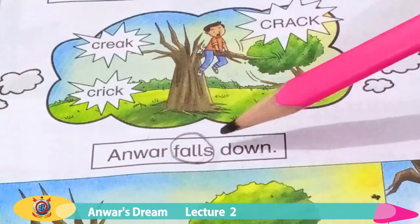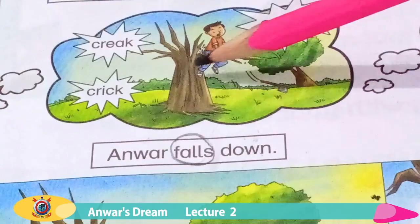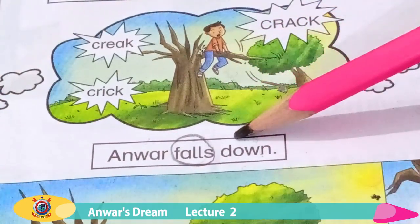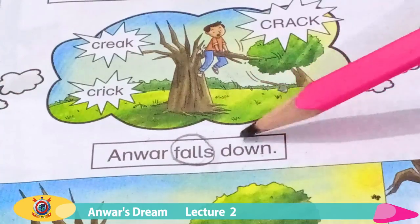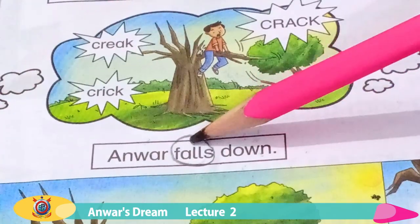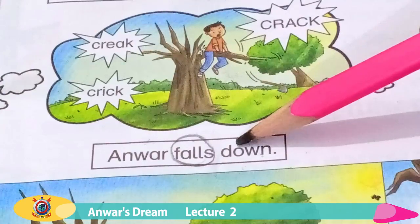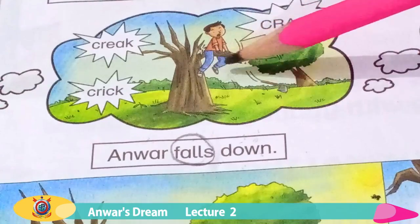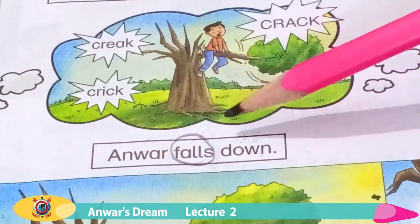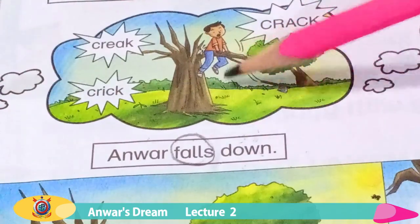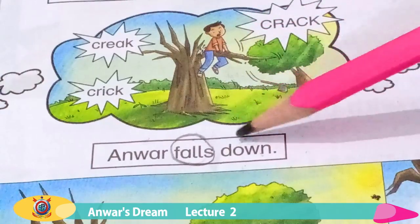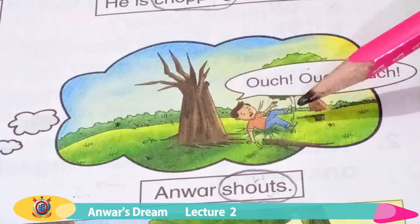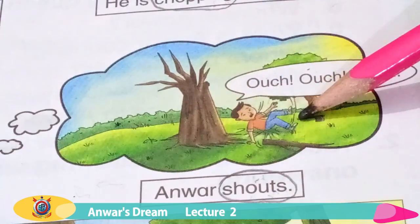Anwar falls down. Falls down — niche gira na. Branch toot rahi hai. Abhi Anwar niche girega. Falls down — niche gira na. And now you can see, Anwar niche gir gaya.